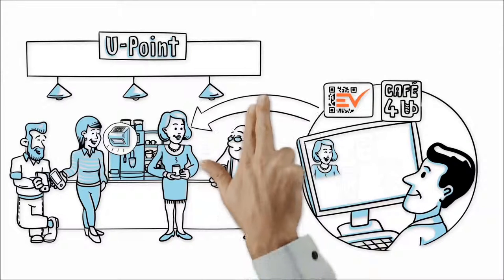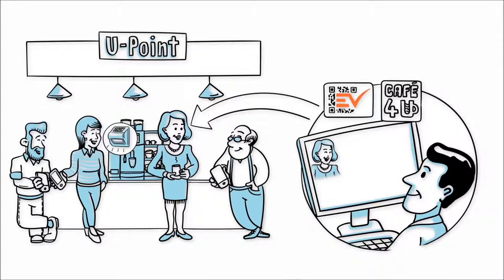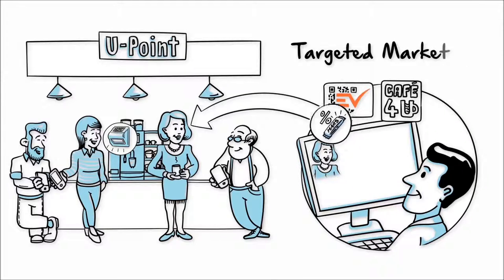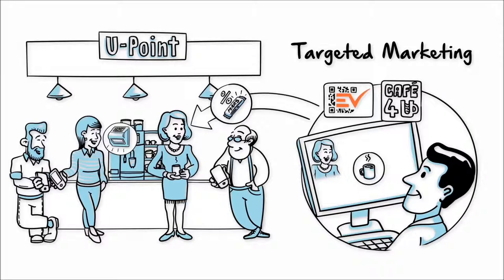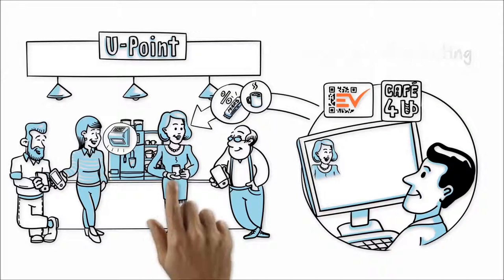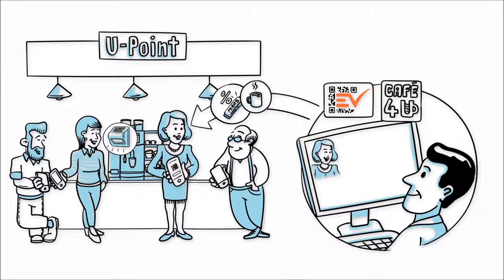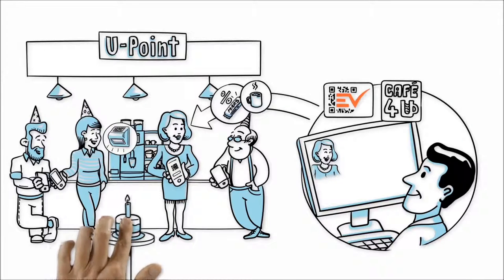From now on, Tom knows exactly what Laura likes and can offer her tailored promotions based on her personal preferences. With the marketing manager tool, he can surprise her by offering a cup of her favorite coffee on her birthday. The e-vending app displays Tom's gift for Laura exactly at the right time.